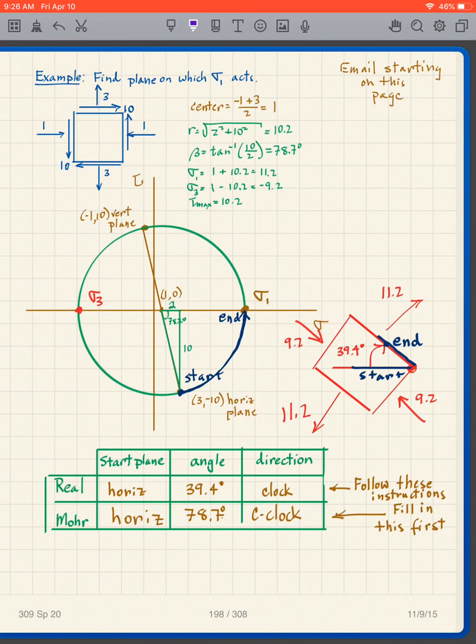Here's a different type of problem. This problem says find the plane on which sigma 1 acts. So we have to take a little bit different approach, but we start out the same way.